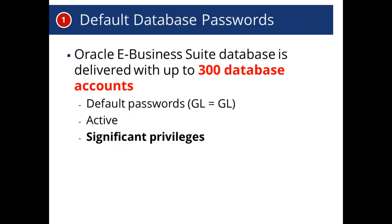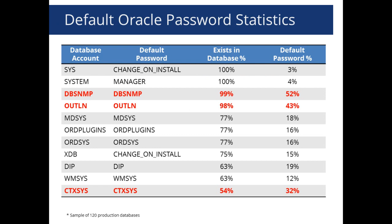We're going to get into the top ten now. The first topic is default database passwords. We're talking about a variety of database passwords delivered with the application — things core to the application and core to the database. An example would be a login called GL where the default password is GL, which is active out of the box and has significant privileges associated with it.